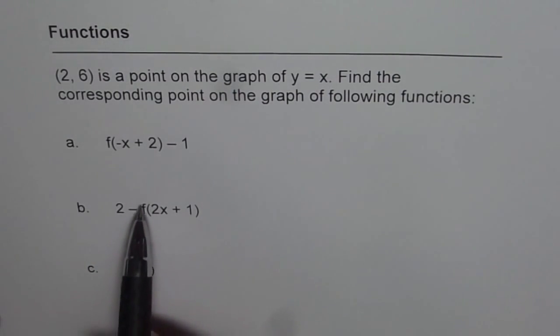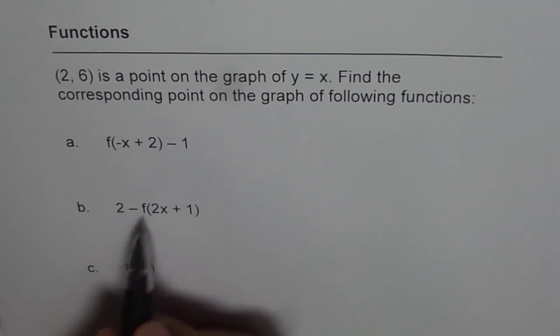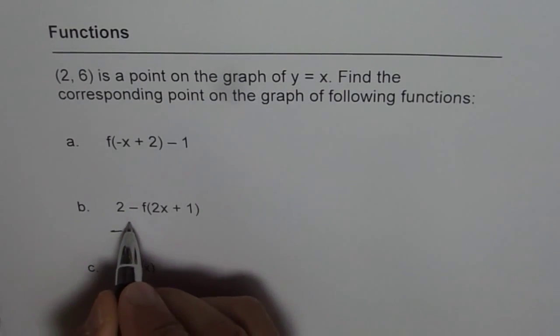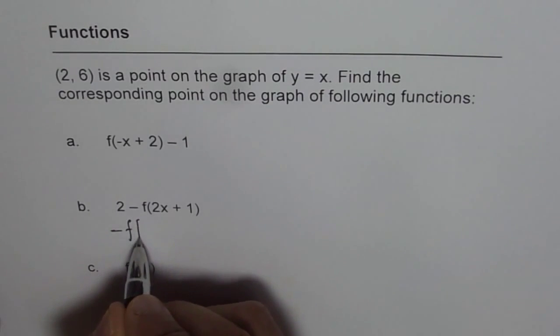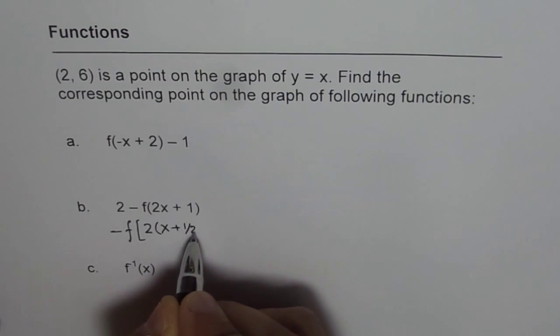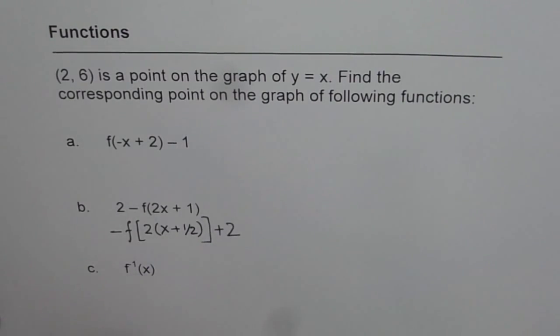The second one is 2−f(2x+1). Now it's a good idea to write this function as −{f[2(x+½)]}+2. We can factor out 2 here and then we get x plus half. So you should actually factor and write down.